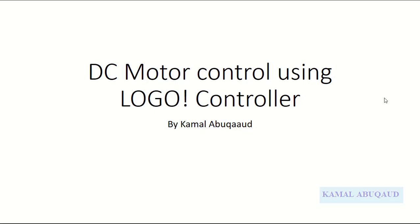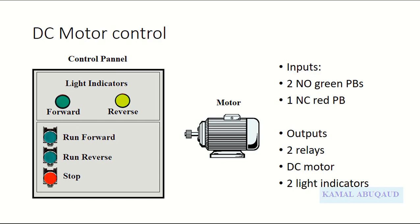Hello, this is Kamal. In this short video I will show you how to run a DC motor in forward and reverse direction using a LOGO controller. On the top of this control panel we have two light indicators: one indicates the motor running in the forward direction, while the other indicates the motor running in the reverse direction. There are two normally open green push buttons — one to run the motor in the forward direction and the other to run it in the reverse direction. There is one normally closed red push button to stop the motor.